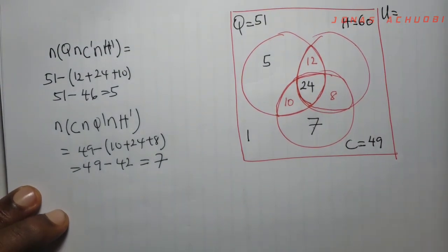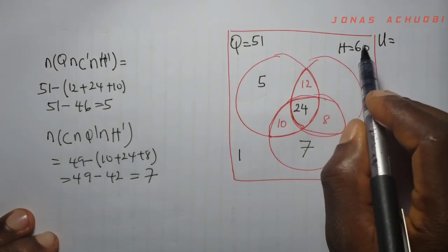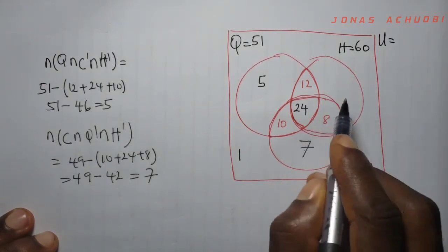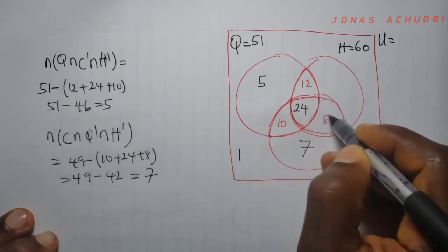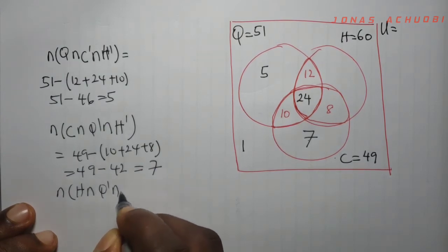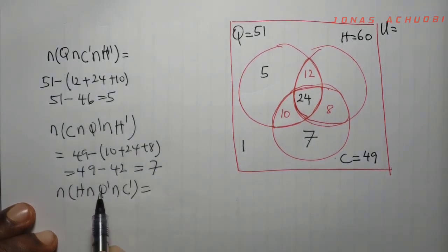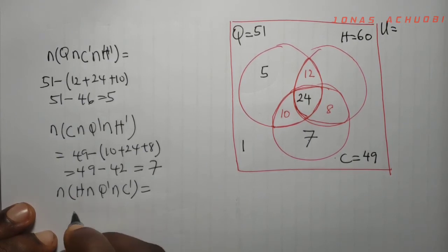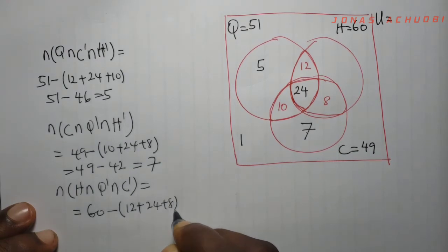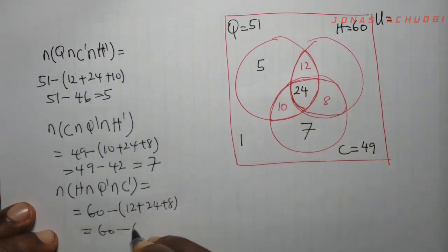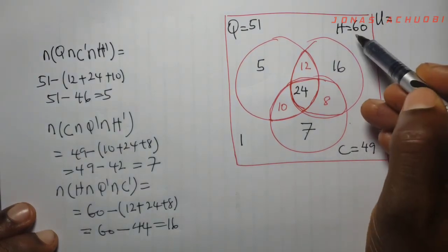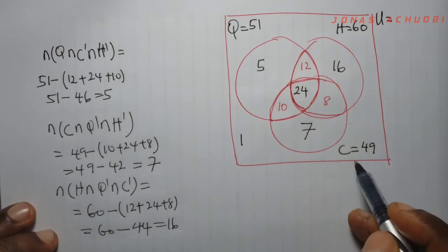The last remaining portion represents the number of persons that liked happy food but did not like high quality and did not like crunches — those who liked only happy food. We take 60 and subtract the intersecting regions: 60 minus (8 + 24 + 12) = 60 minus 44 = 16. So 16 persons liked happy food bread only and not crunches and not high quality bread. Our Venn diagram is now completely filled out.